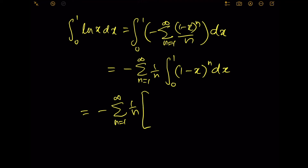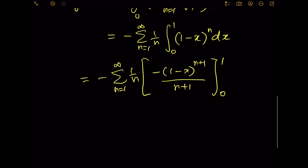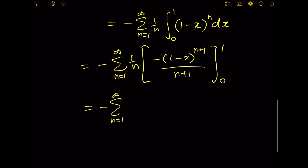The integral of (1 minus x) to the power n can be found by noting the antiderivative is negative (1 minus x) to the power n plus 1 over n plus 1, evaluated from 0 to 1. Replacing the limits gives negative 0 minus negative 1 over n plus 1, which equals 1 over n plus 1.